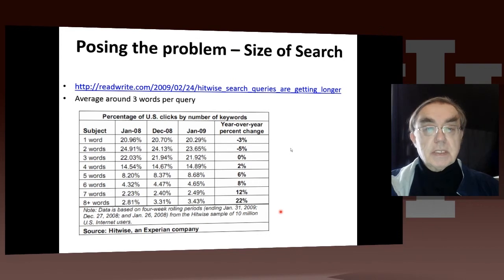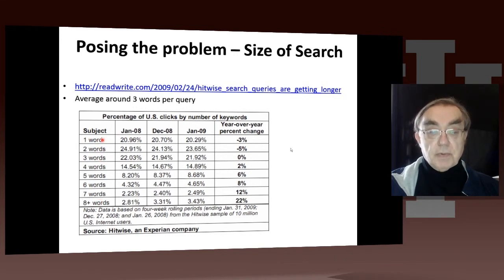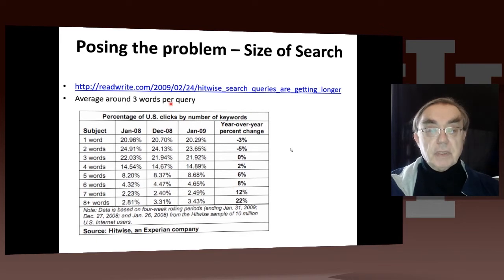In this lesson, we'll first discuss the size of the search. Here we have some data on how big searches of a certain number of words are. We have queries up to over eight words, starting with one word. You can see it's pretty uniform from one word to three and a half words, but then it falls off reasonably rapidly. There is a slight trend to longer queries. The average is around three words per query. This comes from 2009, but I doubt it has changed dramatically.